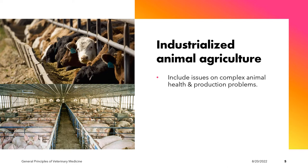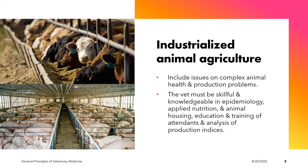Among the issues confronted with industrial agriculture are issues on animal health as well as production problems. The veterinarian in this field must be skillful and knowledgeable in epidemiology — a branch of public health that deals with the incidence, distribution, and possible control of diseases and other factors relating to health.